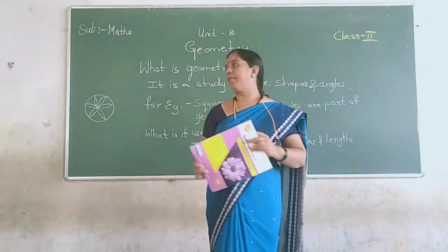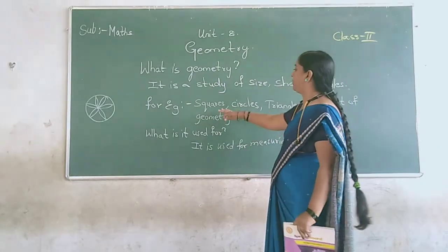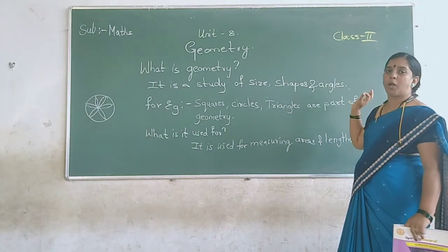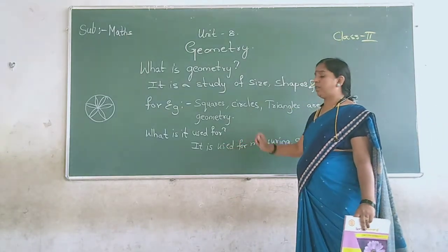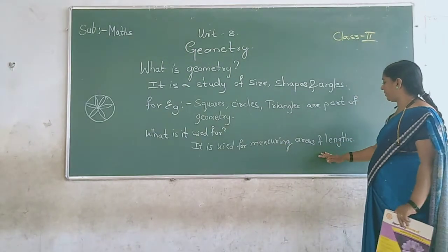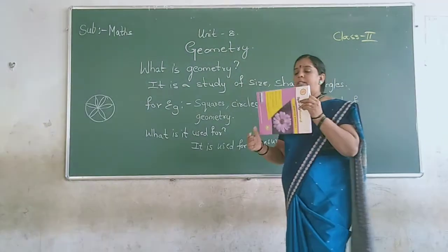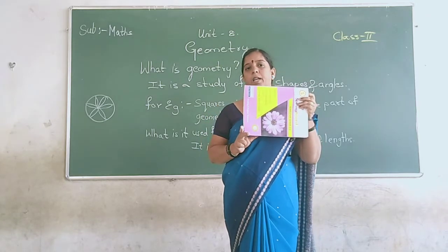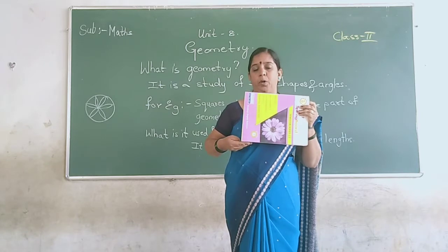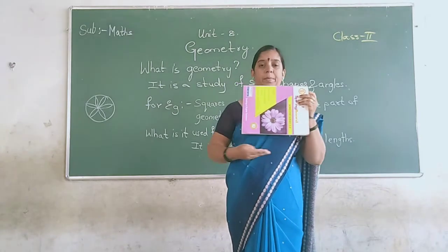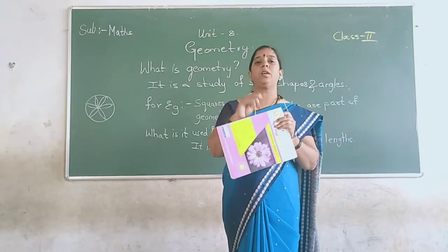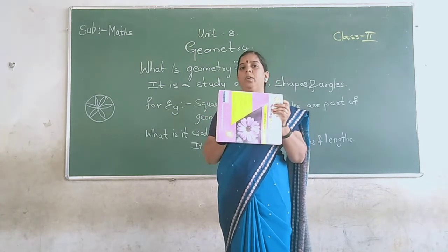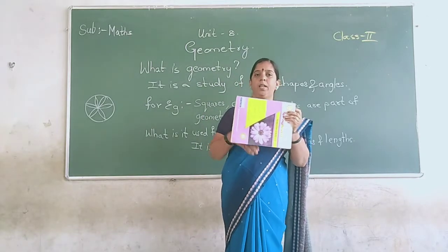So in the same way, geometry is identified with the study of squares, circles, and triangles as part of the geometric part. So where do we use this? It is used for measuring areas and length. The book is in a rectangle shape and you can measure the width and the length of one side. If you measure the width of the book, the other side is also the same, so you need not measure again — because all sides are equal, you need not measure all the sides. If you measure one side, it is the same.